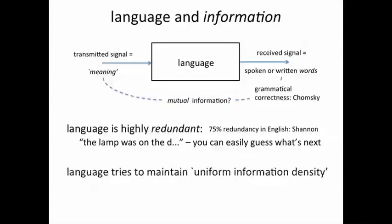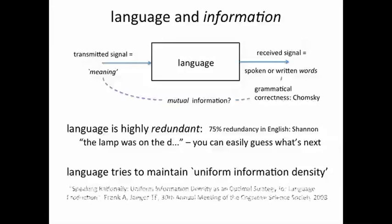It turns out that actual experiments with human subjects have confirmed that language actually tries to maintain a uniform information density. So, we use more words, therefore more bits, when trying to convey something which is deeper or has more information or is a rarer event that the listener might not be expecting.